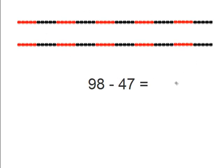So first we need to find ninety-eight on the string of beads. Since we know that there are one hundred beads, if we subtract two we will get ninety-eight. One hundred minus ninety-eight is two. So now we need to subtract the forty-seven. So let's first subtract these three beads here, so we'll mark it off. Minus three.